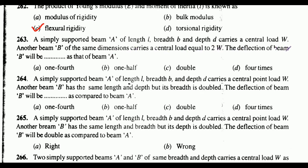A simply supported beam A of length l, breadth b, and depth d carries a central load w. Another beam B of the same dimensions carries a central load equal to 2w — the deflection of beam B will be dash as that of beam A. Options: 1/4, 1/2, double, four times. The correct answer is option C: double. Next, beam B has the same length and depth but its breadth is doubled — the deflection of beam B will be option B: one half.